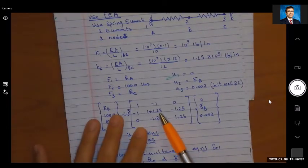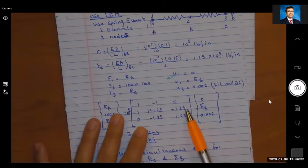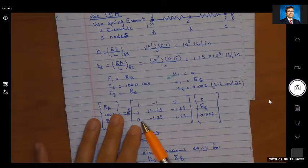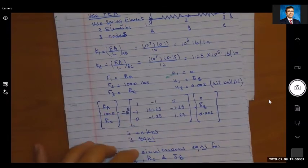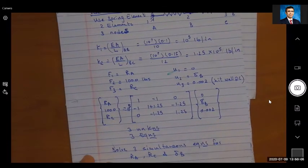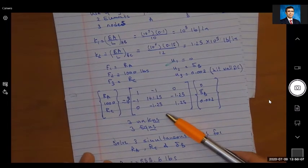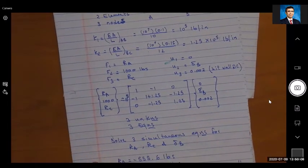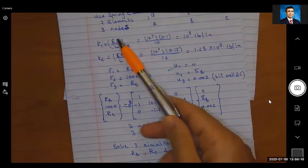For the coefficients of the stiffness matrix, I'm going to use k1 and k2. I'm going to take 10 to the power 5 as a common factor. I have here plus k1 minus k1, so 1 and minus 1 and a 0 on the first row. On the second row I have minus k1, here I have k1 plus k2, so I have here 1 and 1.25, and then I have a minus 1.25 for minus k2. Zero, minus k2, and a plus k2. If you look at this global stiffness equation, it gives me three unknowns and three equations. EA over L.